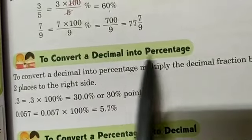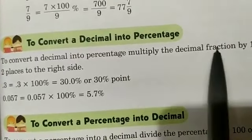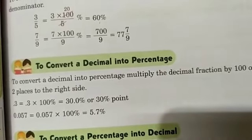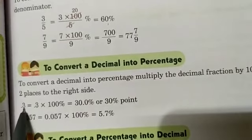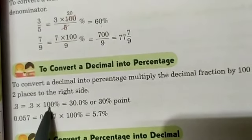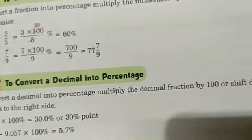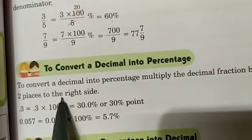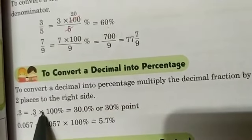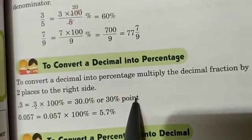Third topic: to convert a decimal into percentage. To convert a decimal into percentage, multiply the decimal fraction by 100, or shift the decimal two places to the right side. For example, 0.3 into 100 — we shift the decimal two places to the right. That gives 30.0, or 30 percent.